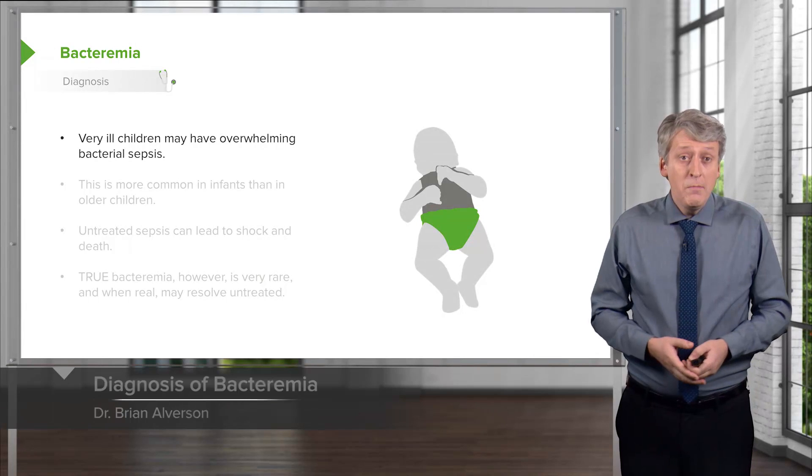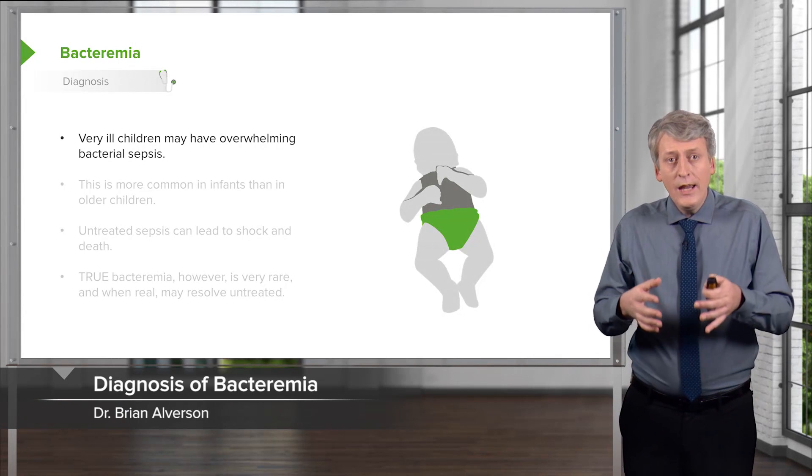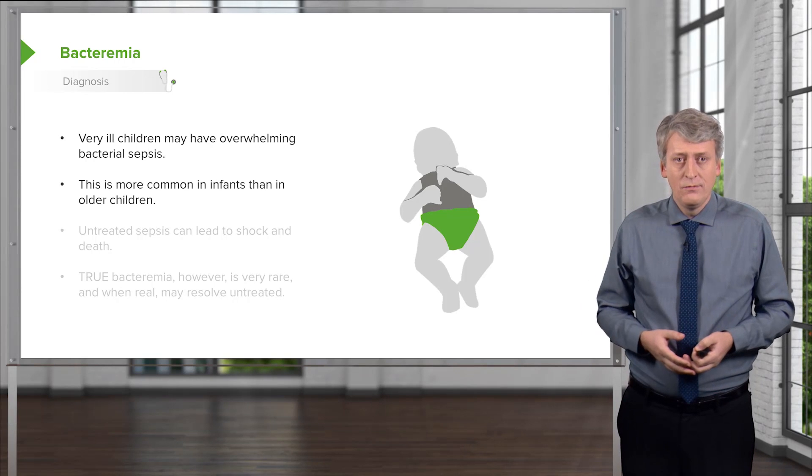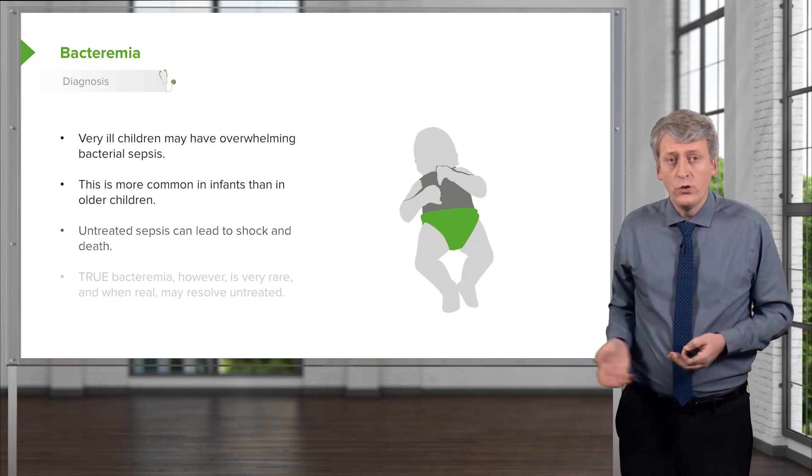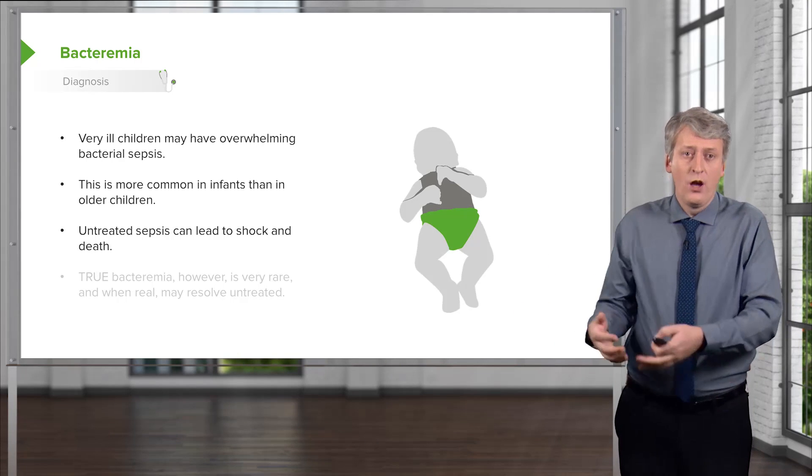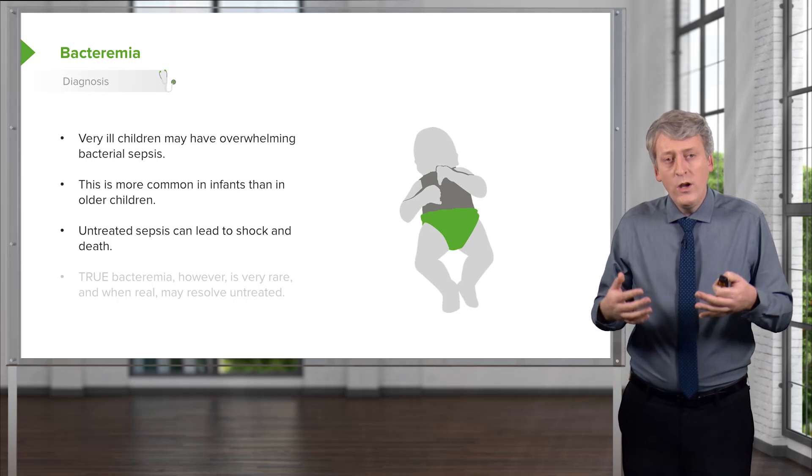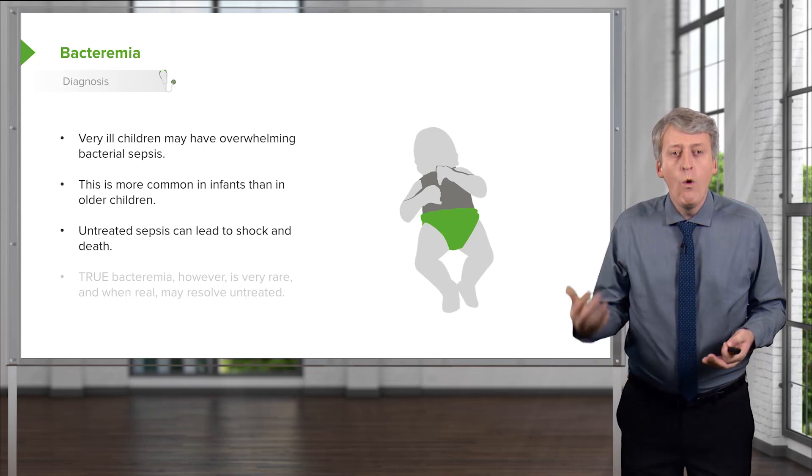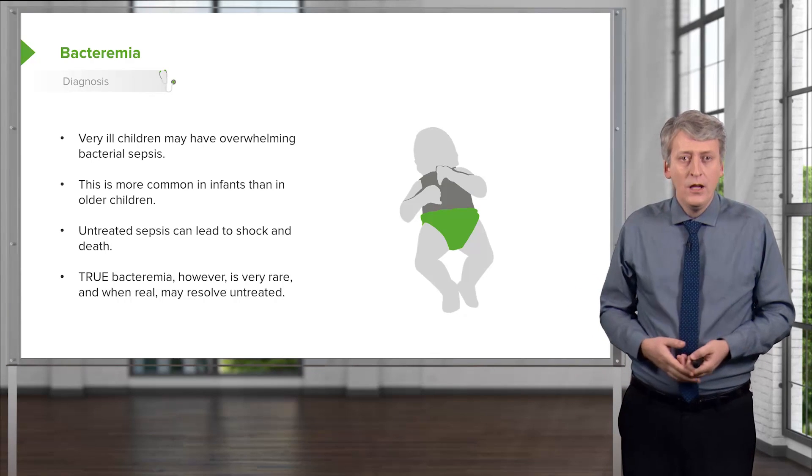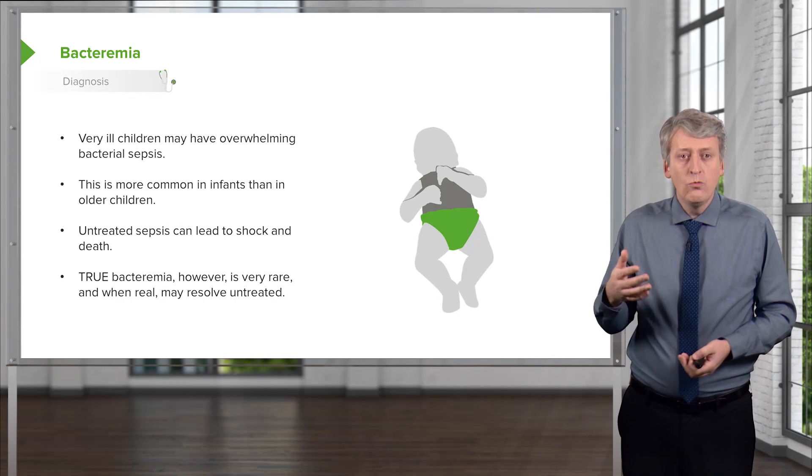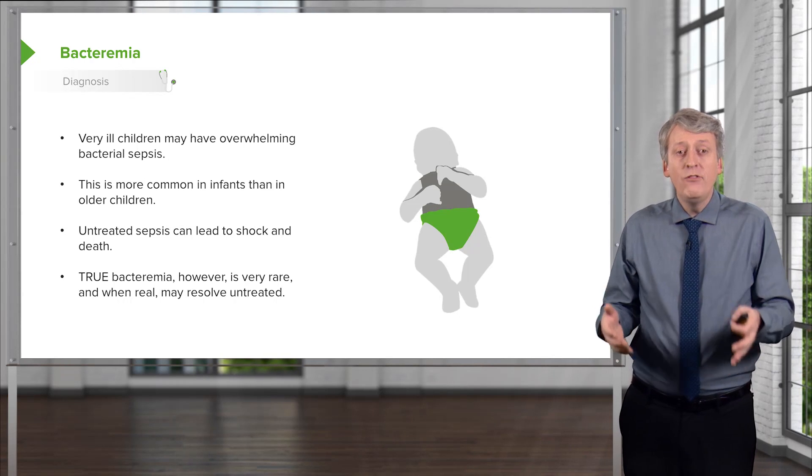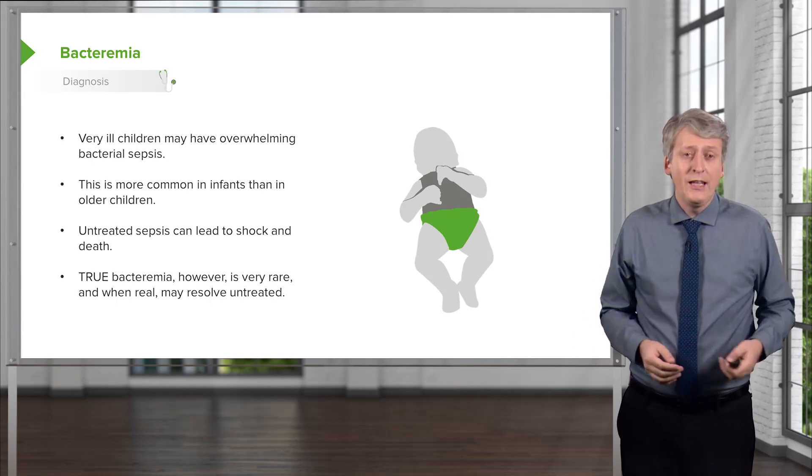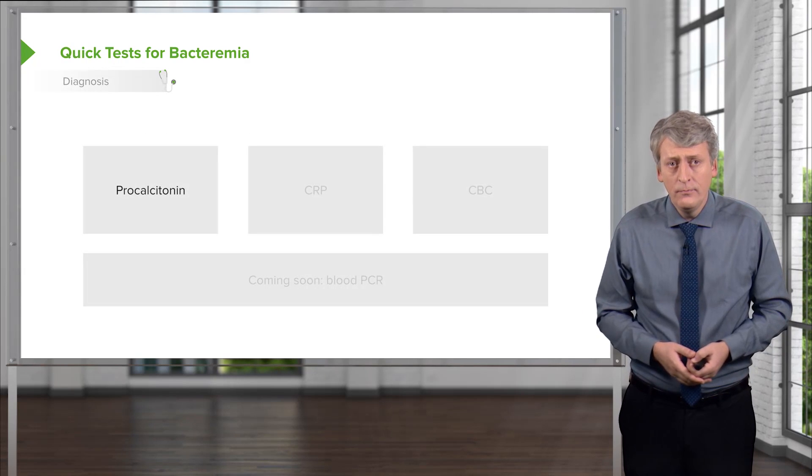How do we approach bacteremia? Very ill children may have overwhelming bacteremia or bacterial sepsis, and this is more common in infants than it is in older children. Untreated sepsis can lead to shock and death, so we do worry about bacteremia. But what's the likelihood of bacteremia in a very well-appearing patient? It's very unlikely. True bacteremia is rare and when real may even resolve untreated. Remember, you were probably bacteremic transiently yesterday when you brushed your teeth.